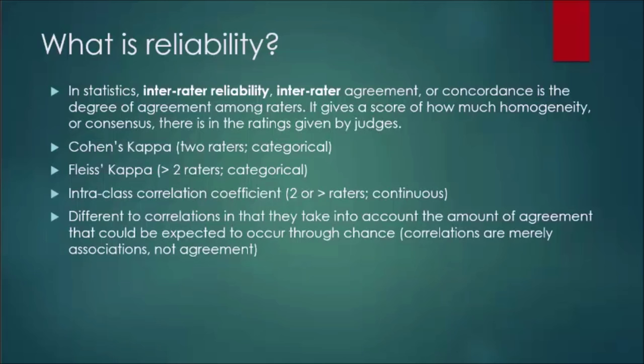Reliability is different from correlations in that they take into account the amount of agreement that could be expected to occur through chance, whilst correlations are merely associations between two different scores, and not agreement.